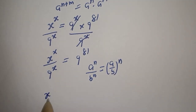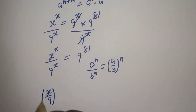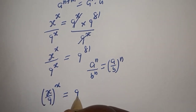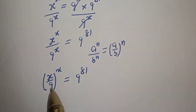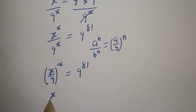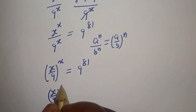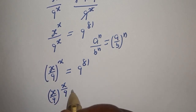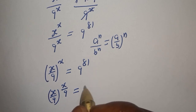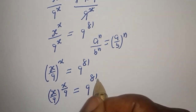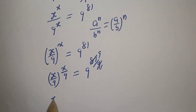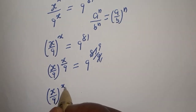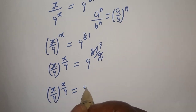We get S over 9 to the power of S equals 9 raised to power 81. Now, let's divide the exponent of both sides by 9. That gives us S over 9 to the power of S over 9 is equal to 9 raised to power 9.